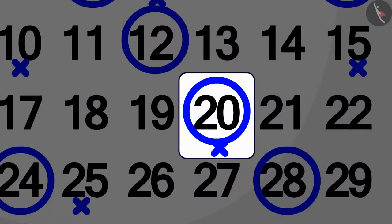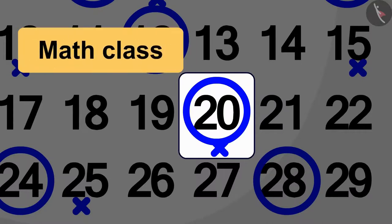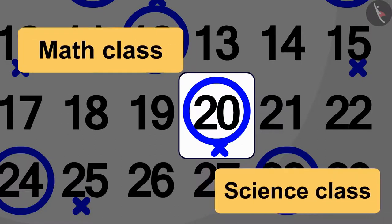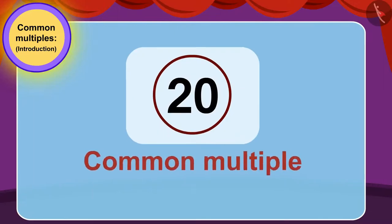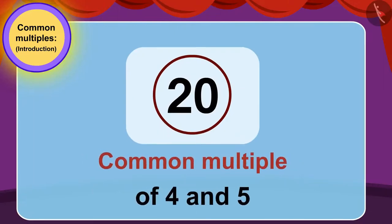Here, on the twentieth, Bablu will have both mathematics and science classes. In other words, twenty is a common multiple of both four and five.